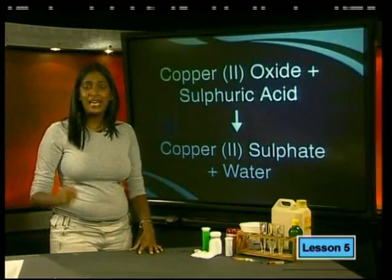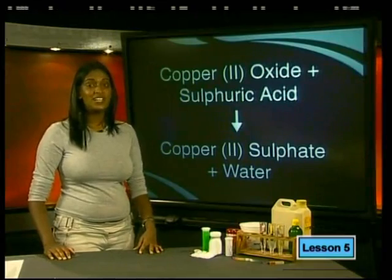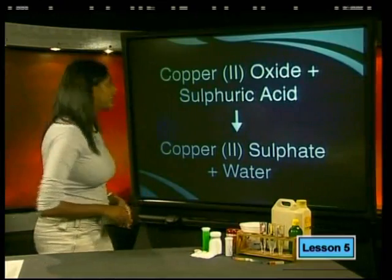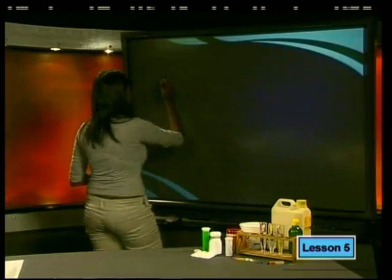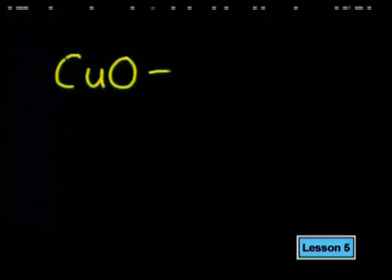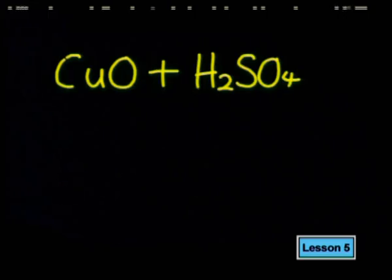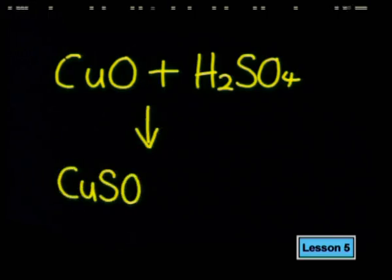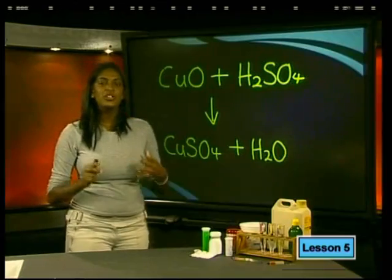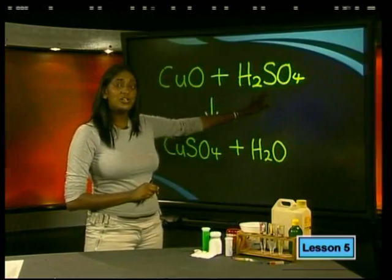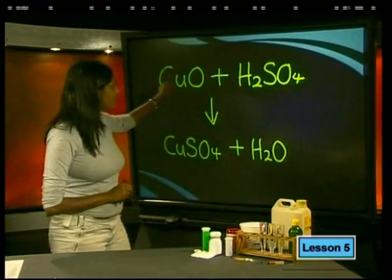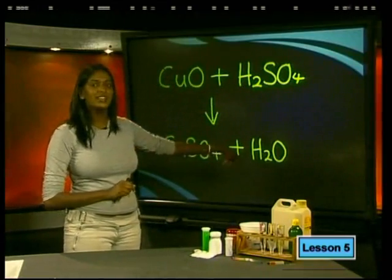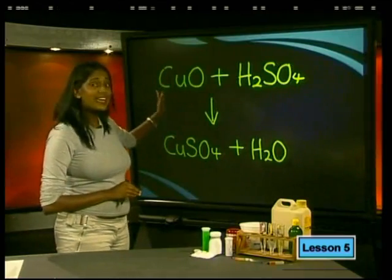Wasn't that solution an amazing blue color? Now, did you manage to write the balanced equation? Copper-2-oxide, CuO, plus sulfuric acid, H₂SO₄, react to form copper-2-sulfate, CuSO₄, plus water, H₂O. Notice in this reaction, the acid donates two hydrogen ions and the metal oxide accepts these to form water. So the metal oxide is acting as a base.